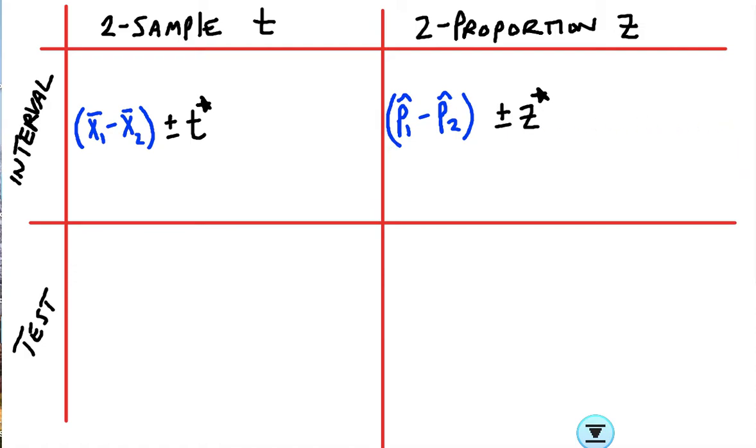I'm kind of hopping around, but maybe you'll see. If you're doing a test, if it's a t test, it's going to be t equals some fraction. And if it's a z test, it's going to be z equals some fraction.